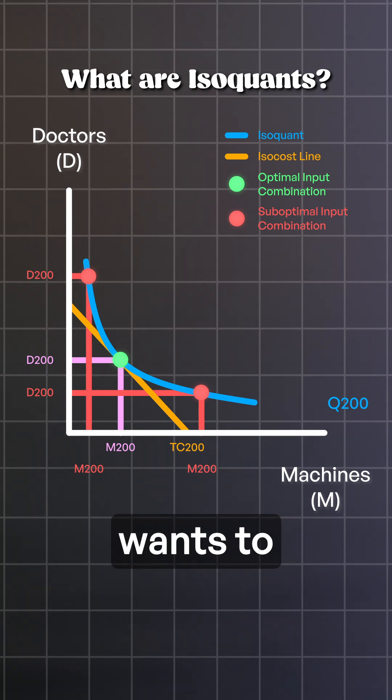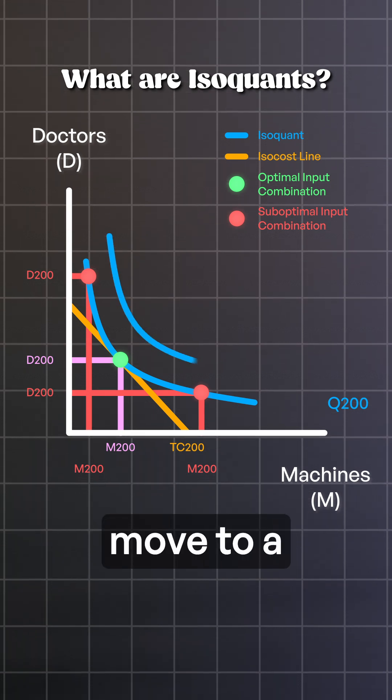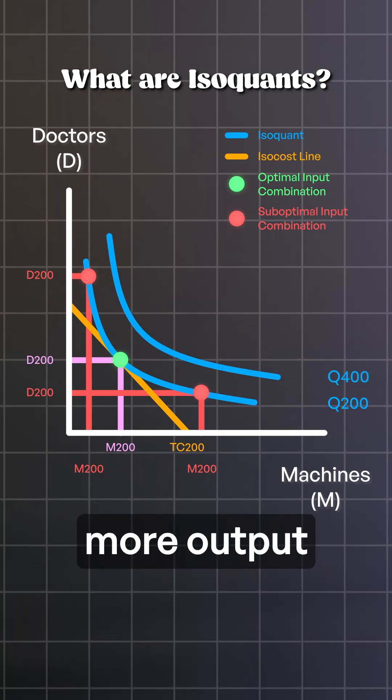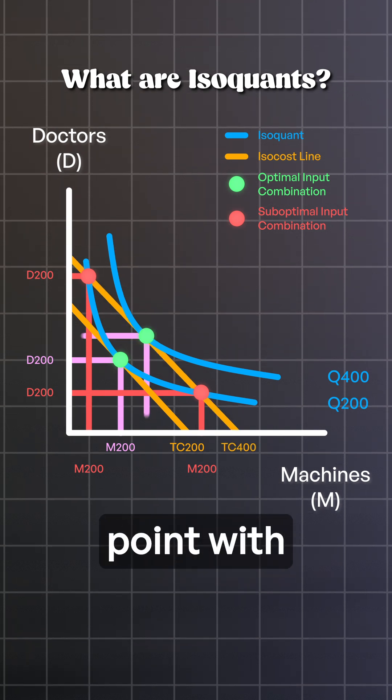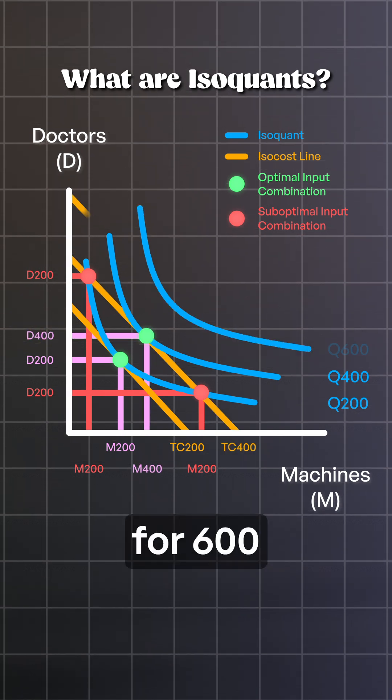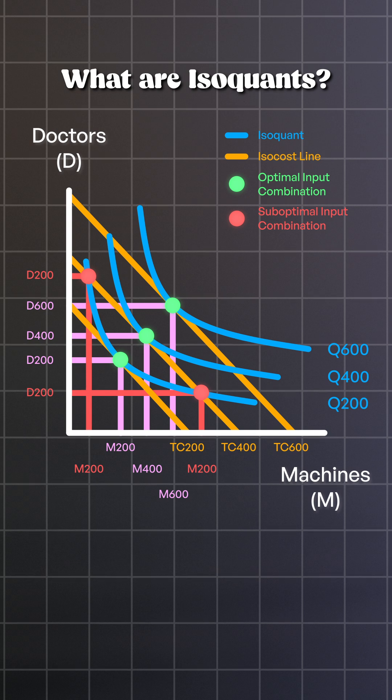But what if the hospital wants to treat 400 patients? Then we move to a higher isoquant, as more output means a new curve. Again, we find the tangency point with a new isocost line. Repeat this for 600 patients, and you get a third tangency point.